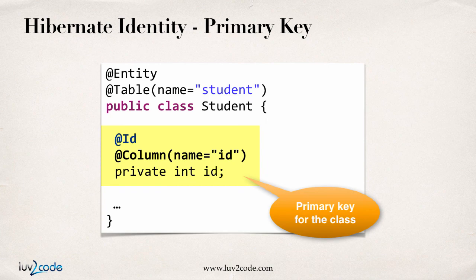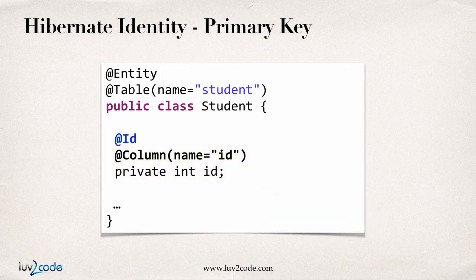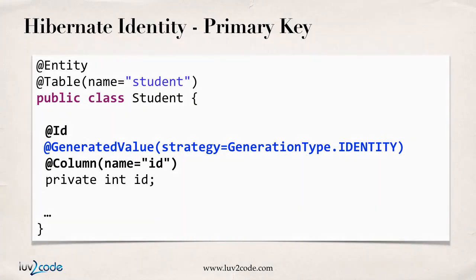If you want to be explicit, you can tell Hibernate how to actually perform the generation. You can tell Hibernate to use a given strategy for generating that ID. If you don't specify anything, by default it'll use the appropriate strategy for that given database implementation. But here I like to be explicit and write it out longhand, so we can say @GeneratedValue — this is a new Hibernate annotation.